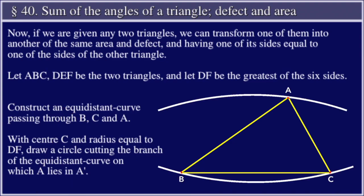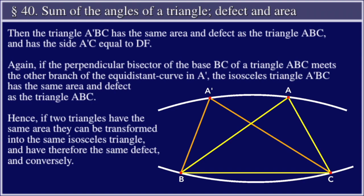Construct an equidistant curve passing through B, C, and A. With center C and radius equal to DF, draw a circle cutting the branch of the equidistant curve on which A lies in A'. Then the triangle A'BC has the same area and defect as the triangle ABC and has the side A'C equal to DF.